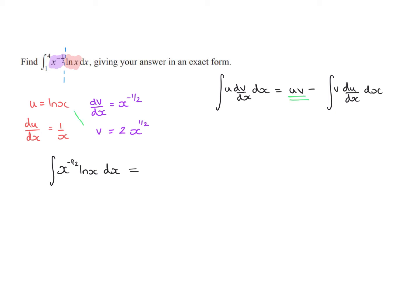So we want uv first of all — that's the product of these two functions. It makes sense to write 2x to the half first for neatness, and then we want ln of x. At the very end we're substituting in limits of 1 and 4, so we're not really going to need to worry about a modulus sign here. Minus the integral of v times du by dx — that's the product of this pair of functions. I'm going to pull the 2 outside the integral sign, so it's just a multiplicative factor: x to the half times 1 over x with respect to x. I'll substitute in the limits at the very end.